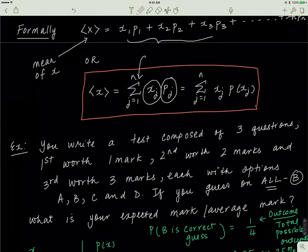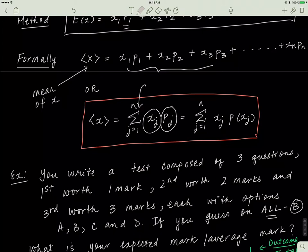Let's do an example. Let's say you write a test that only has three questions. The first is worth one mark, the second is worth two marks, and the third is worth three marks. You have four options: A, B, C, and D. Let's say you didn't study for this test at all — it's a pop quiz and you don't know the answer. So you decide you're going to guess B on all of them. If you guess B on all of them, what should you statistically expect your mark to be? This is where expectation values come in, and this is where averages come in when you have probabilities associated with some data set.